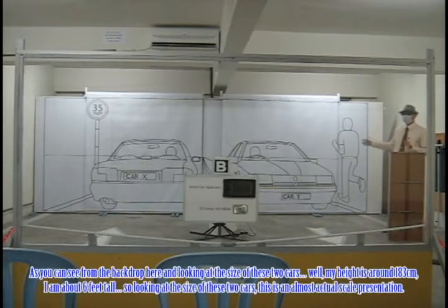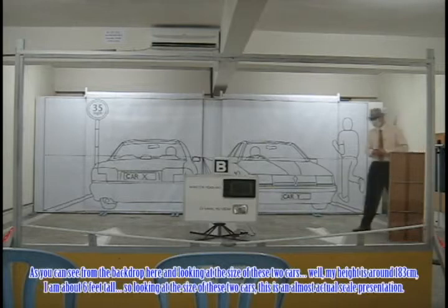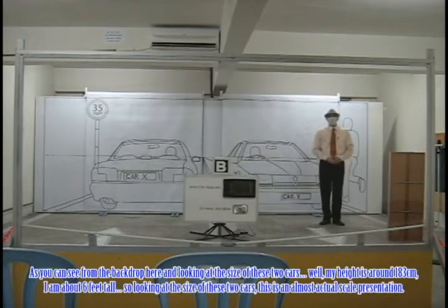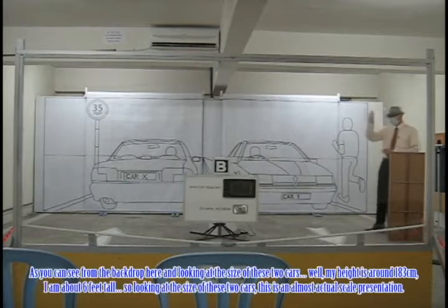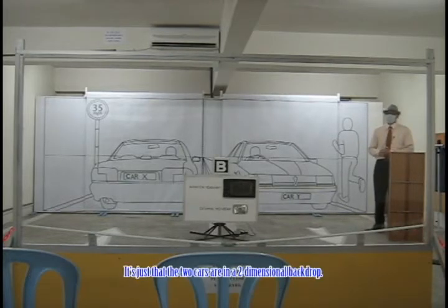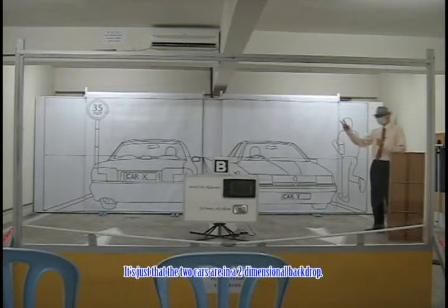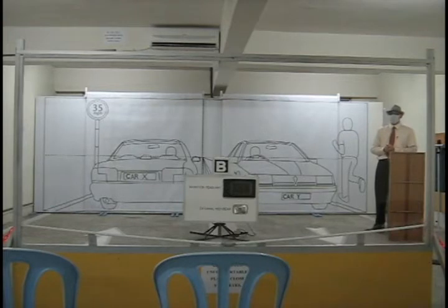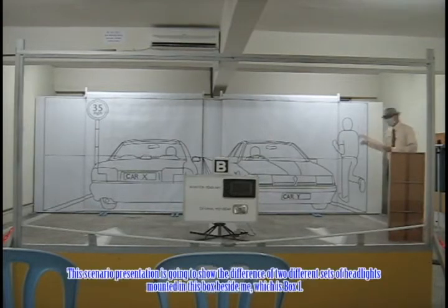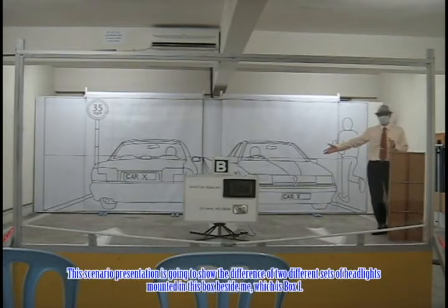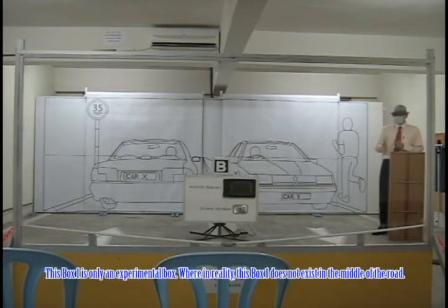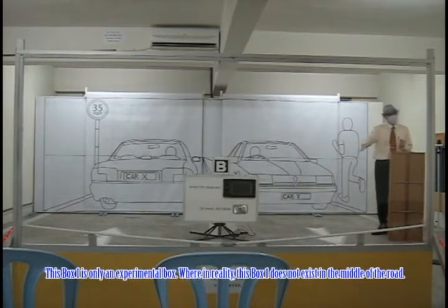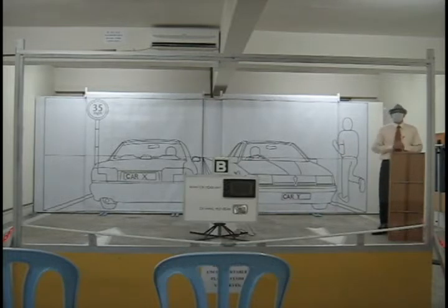As you can see from the backdrop here, looking at the size of these two cars — my height is around 183 cm, I am about 6 feet tall — so looking at the size of these two cars, this is an almost actual scale presentation. It's just that the two cars are in a two-dimensional backdrop. This representation is going to show the difference of two different sets of headlights mounted in this box beside me, which is box 1. But this box 1 is only an experimental box; in reality, box 1 does not exist in the middle of the road.